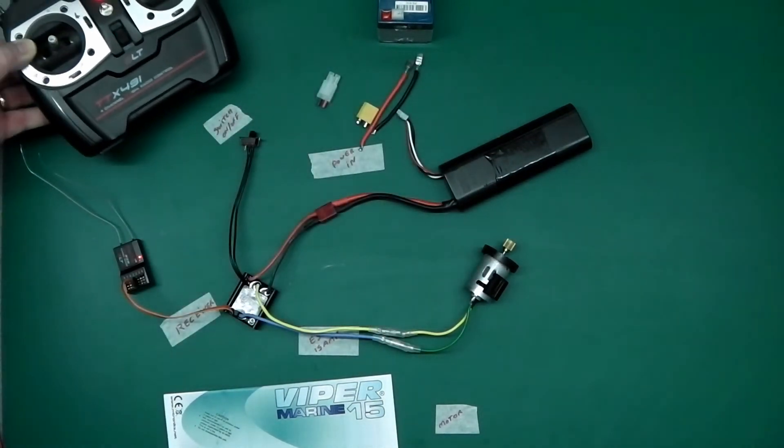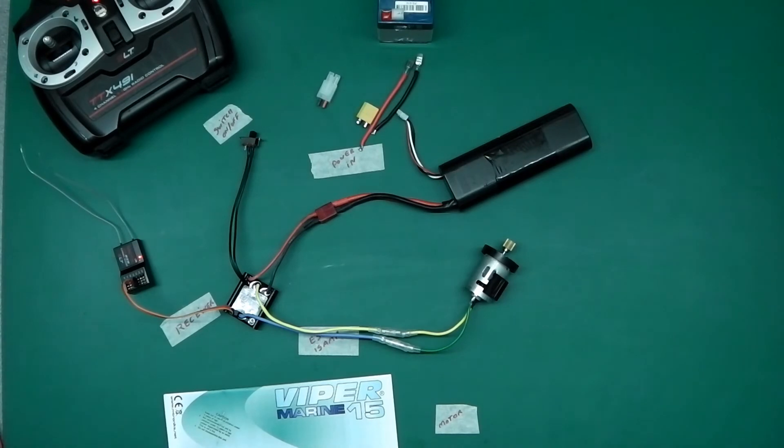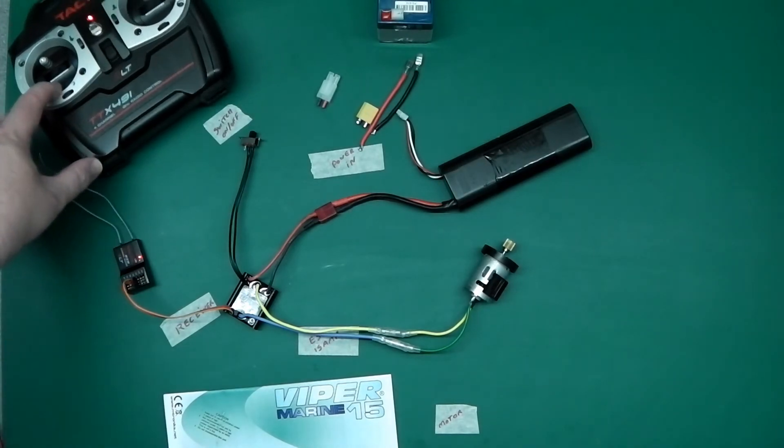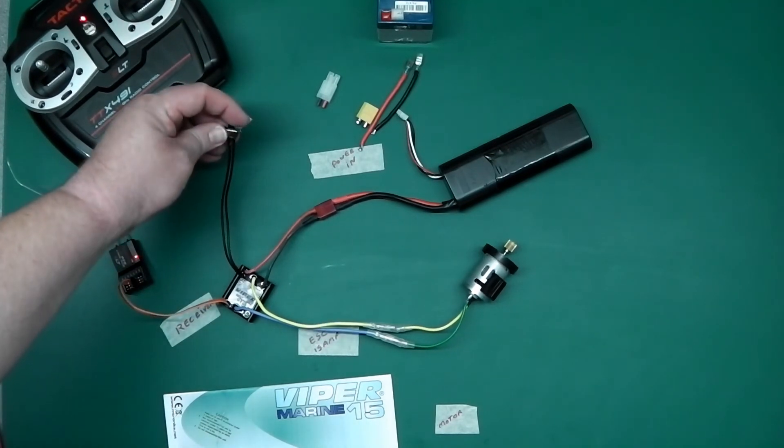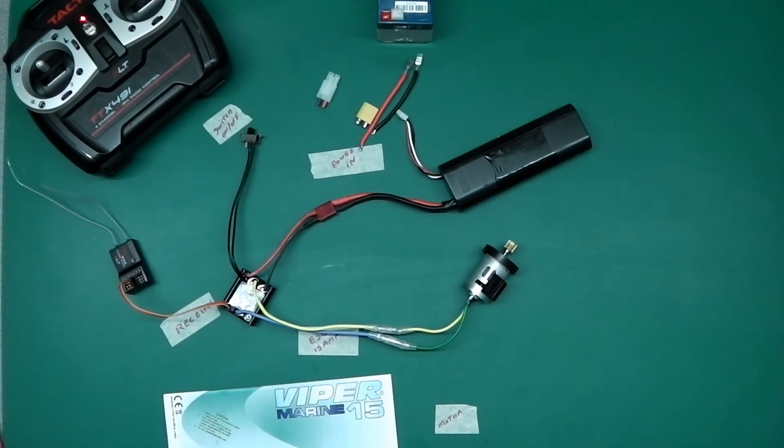So, first of all, we need to set it up. So, leave your transmitter turned on. Turn the ESC off.